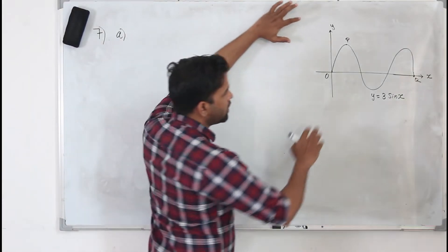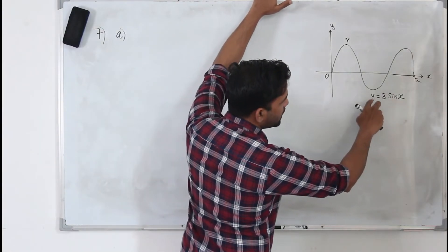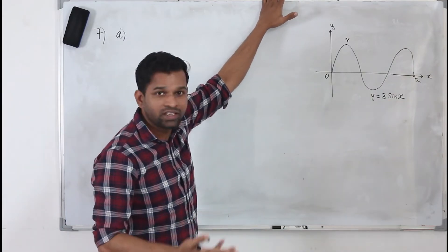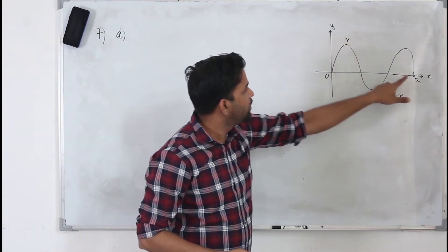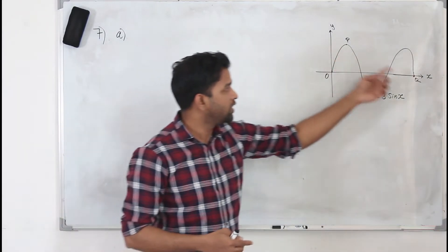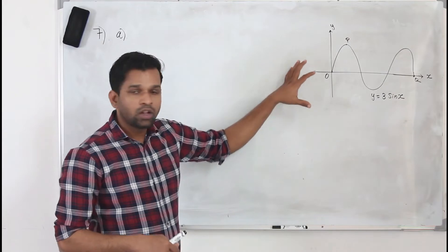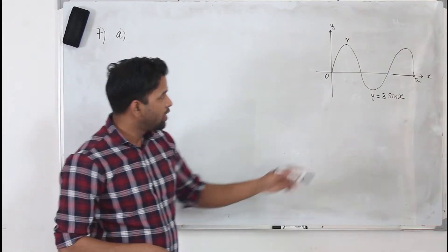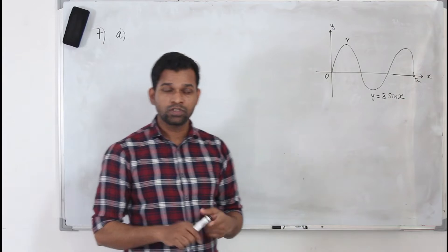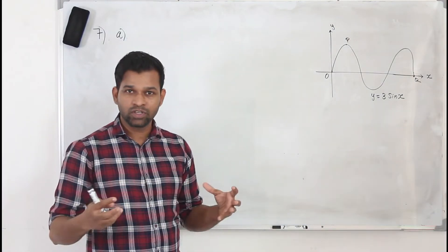We are given curve C1. The equation of the curve is y equals 3 sine x — not just sine x, but 3 sine x — and we are given two points P and Q. We need to find the coordinates of P and Q. To solve these types of questions involving sine, cos, or tan, you first need to know the basic curves — sine, cos, and tan — and second, you need to know the basic transformations.